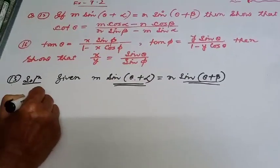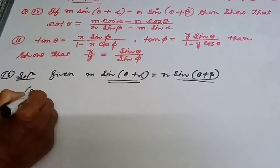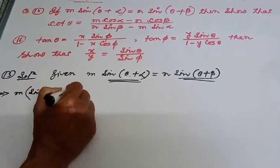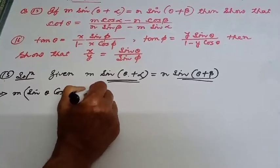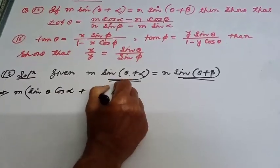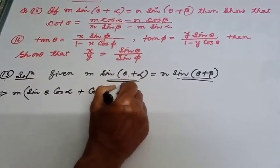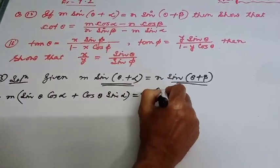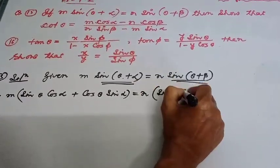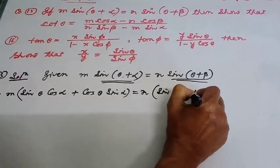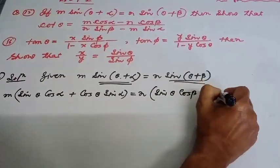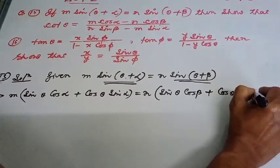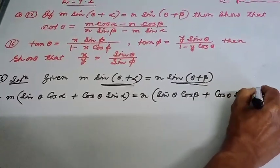Breaking it down: m times [sin θ·cos α + cos θ·sin α] is equal to n times [sin θ·cos β + cos θ·sin β].